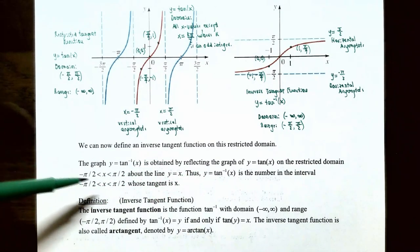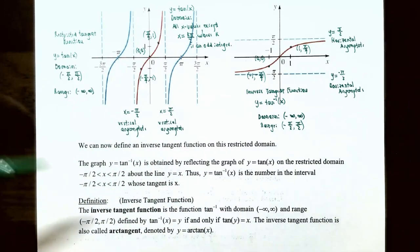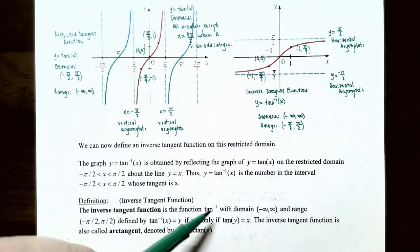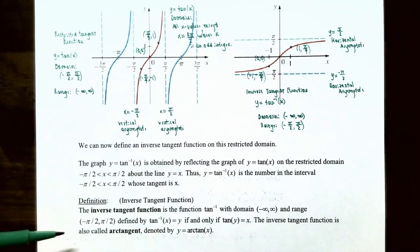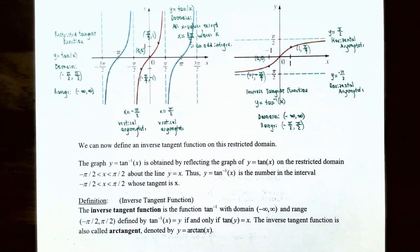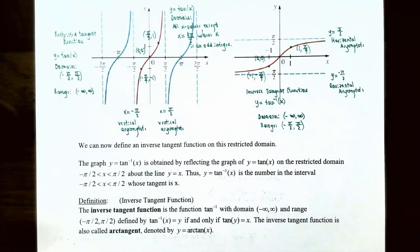Y equals inverse tangent of x is obtained by reflecting the graph of y equals tangent of x on the restricted domain — where x is between negative pi over 2 and pi over 2, not including the endpoints — about the line y equals x. The definition: y equals inverse tangent of x if and only if tangent of y equals x. The inverse tangent function is also called arctangent, denoted y equals arctangent of x.